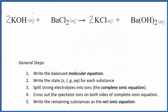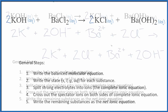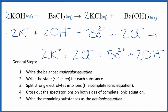When everything's aqueous, that means nothing's changed. There's no precipitate, so there's no reaction. Let's split all of these apart into their ions and see what that looks like. On the top we have the reactants, on the bottom the products — they're identical. We have the same ions on the top and the bottom, and they're all aqueous. So nothing's changed — no reaction. We have the same ions we start with, and we finish with the same ions.